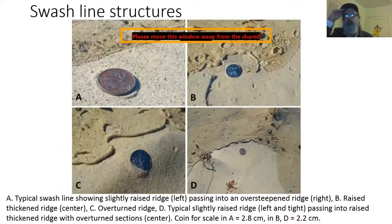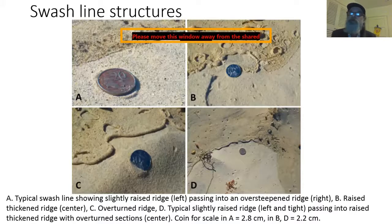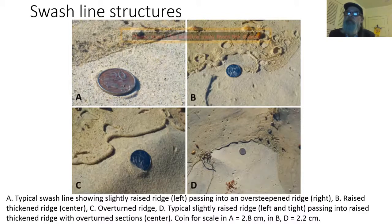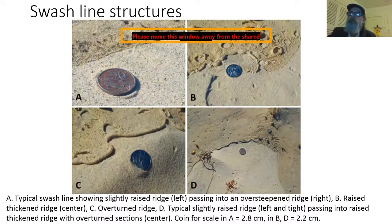The swash line structures mark the very extremity of wave swash reaching up onto dry sand. These are sometimes just smooth, sometimes oversteeped ridges, sometimes overturned — as you can see in the lower left — and sometimes variable along the swash load, going from slightly thickened to overturned, as you can see in the bottom right.